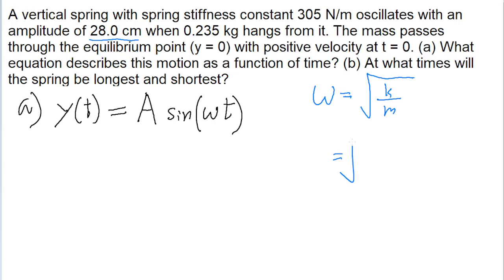Both of those values are given to us. The spring constant is given as 305 newtons per meter. And the mass is given as 0.235 kilograms.